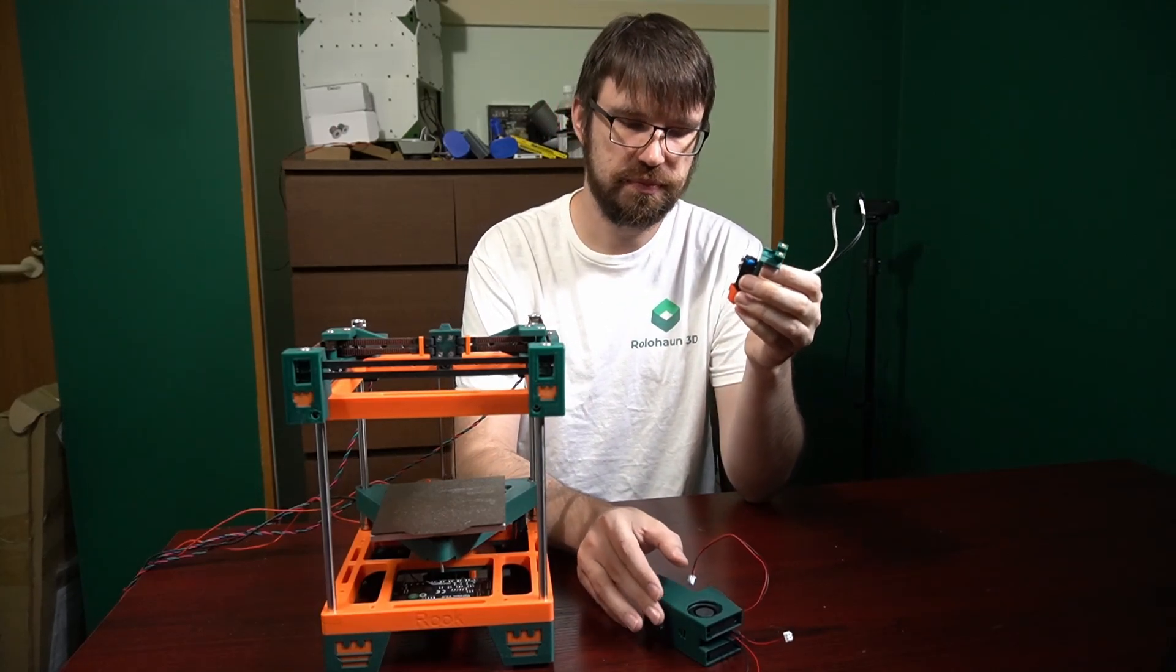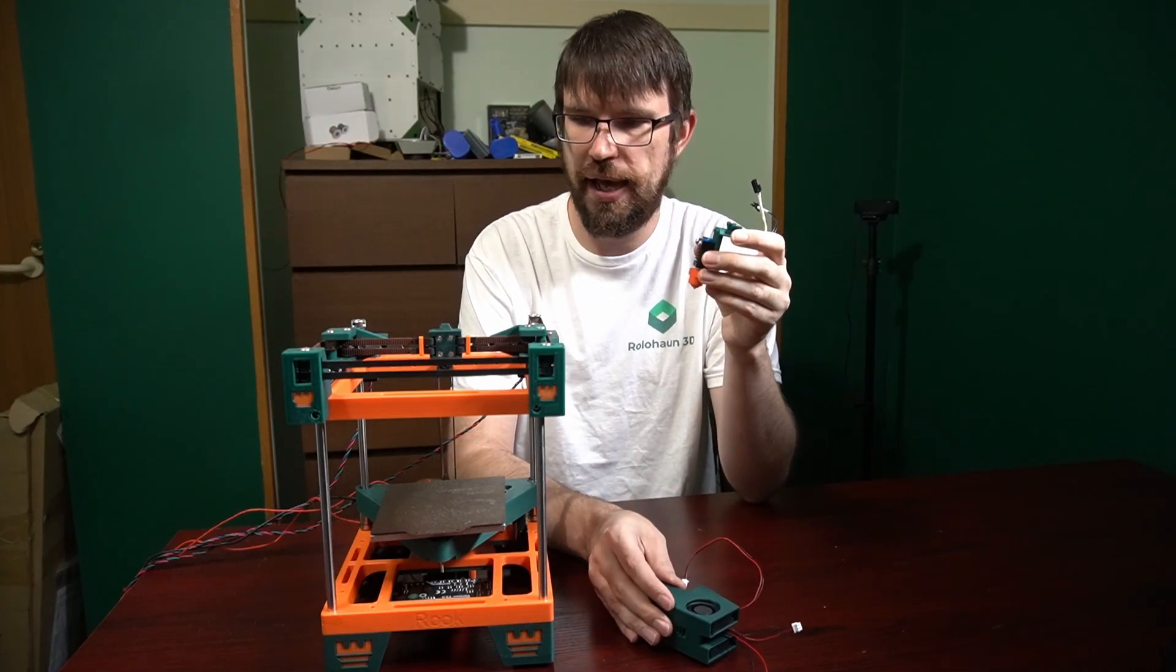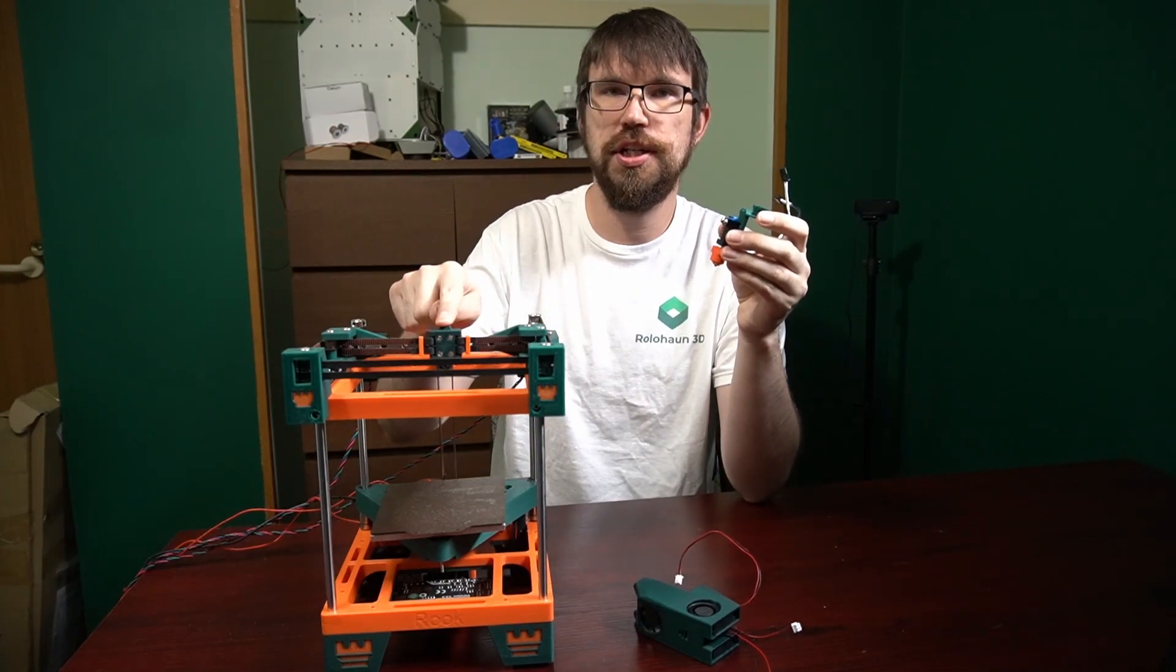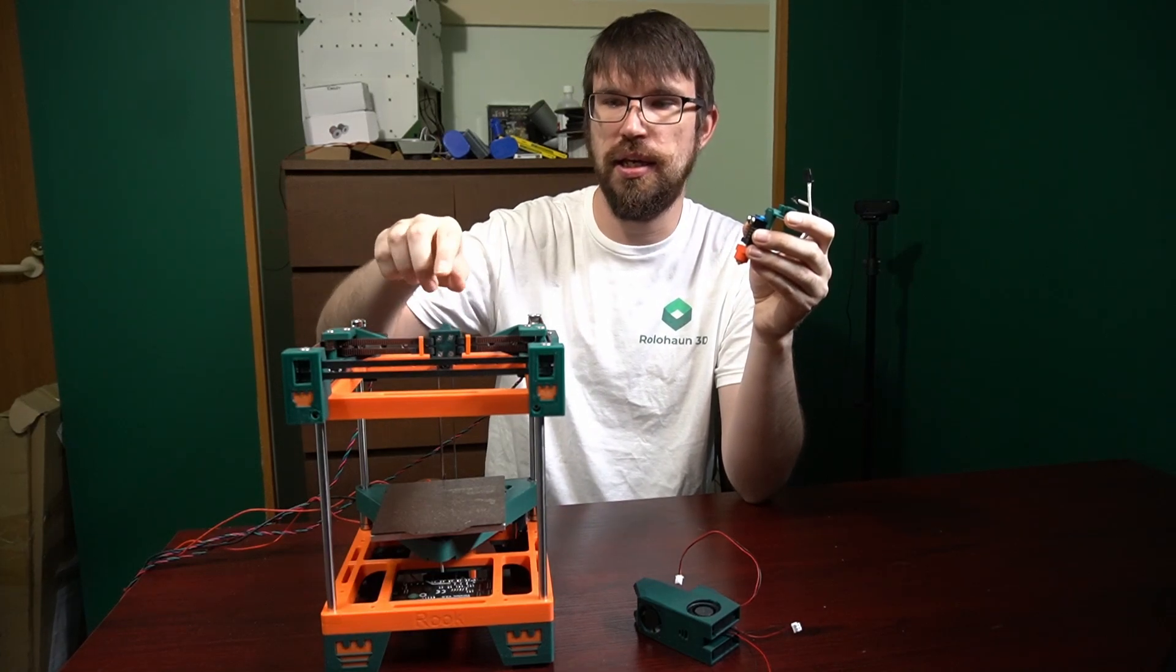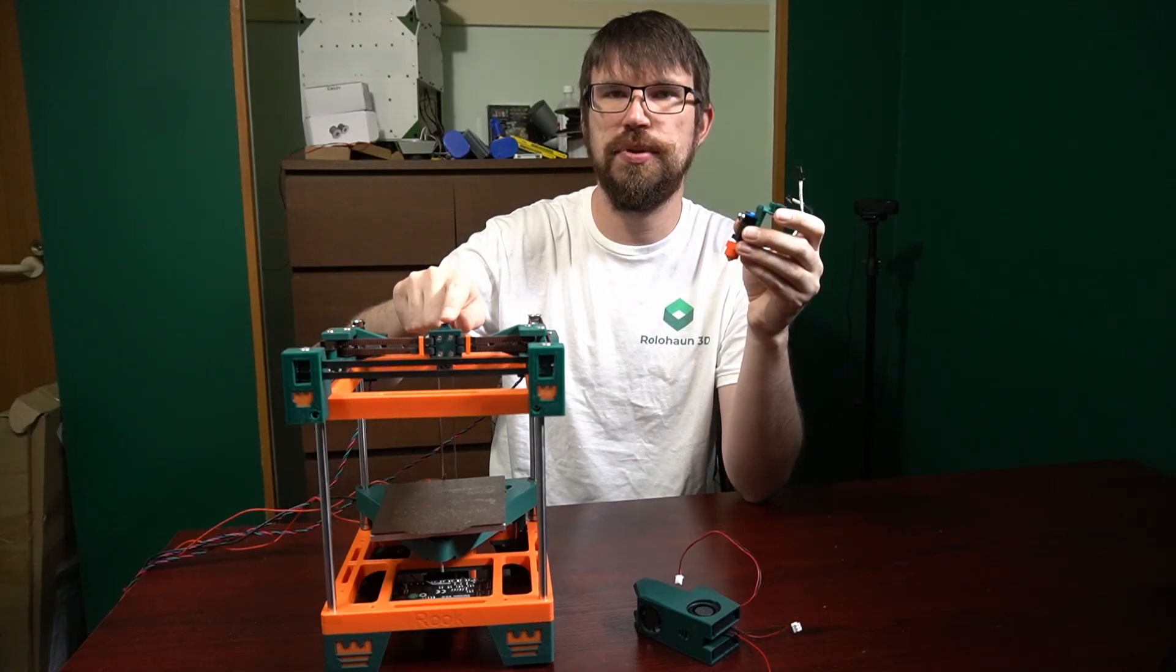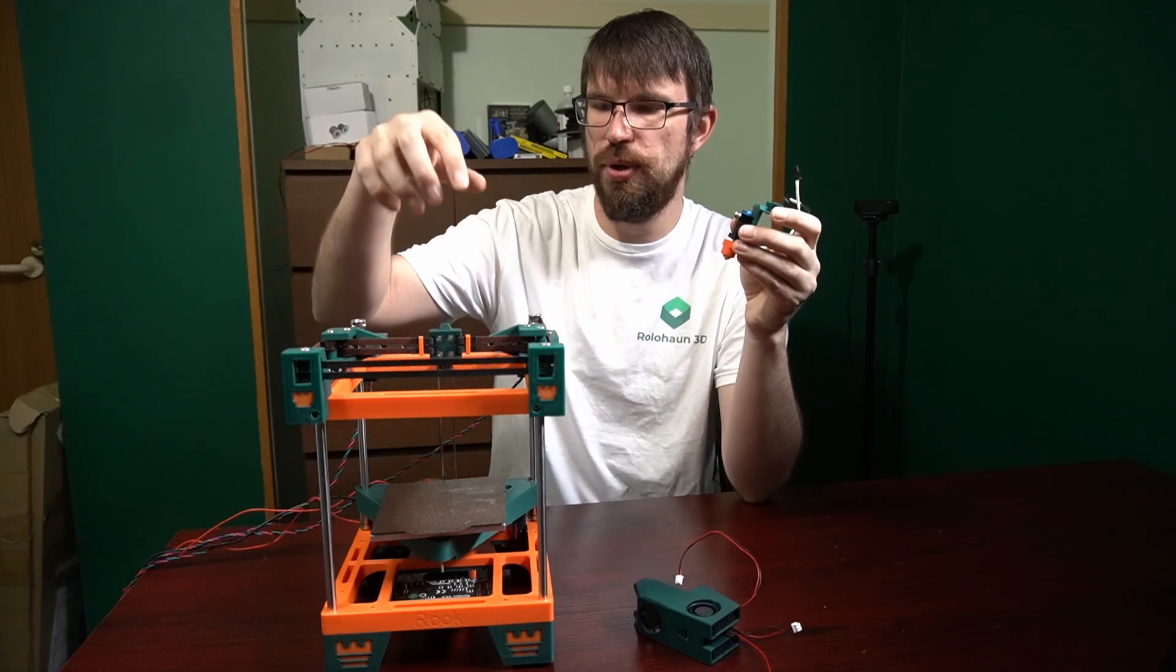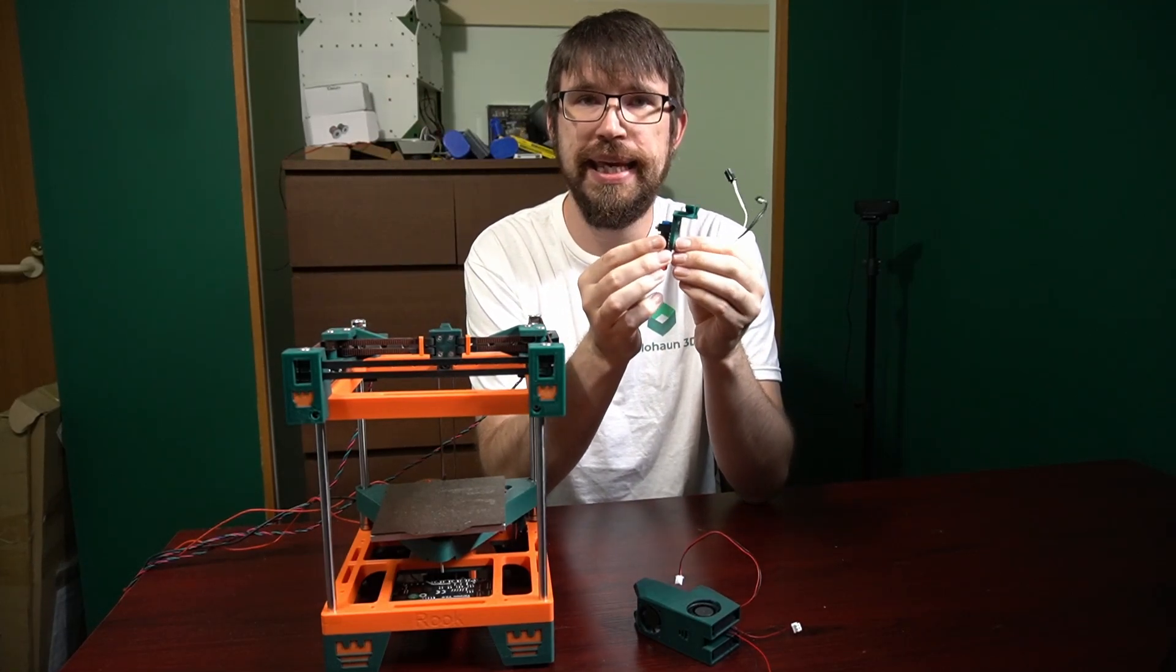There's three components to the Rookery tool head. We have our carriage here, which is a very simplistic part - belts attach to it and it goes on the MGN9C rail here. It has a little protrusion here so that we can put our Rookery tool head on. Next, we have the key.